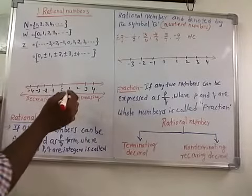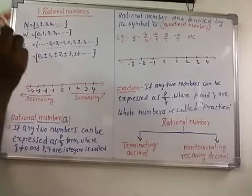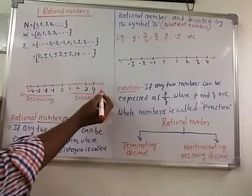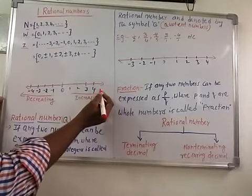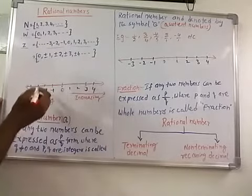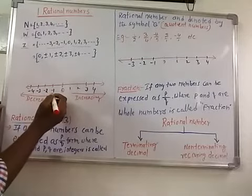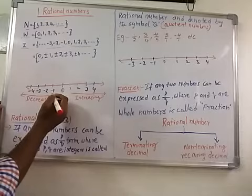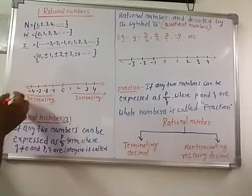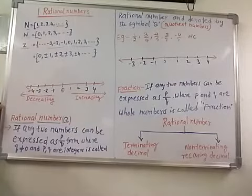In integers, 1 is the least positive integer and there is no greatest positive integer. −1 is the greatest negative integer and there is no least negative integer.